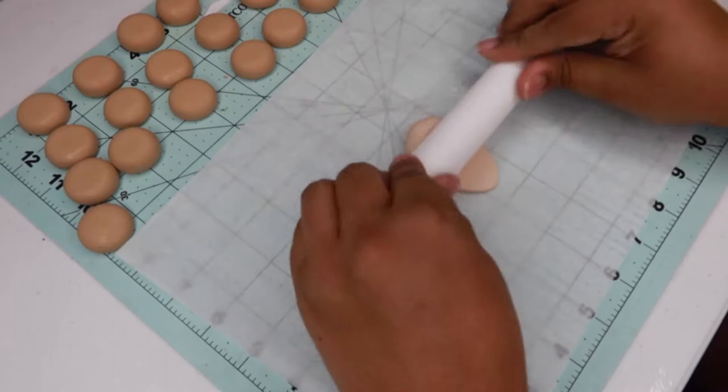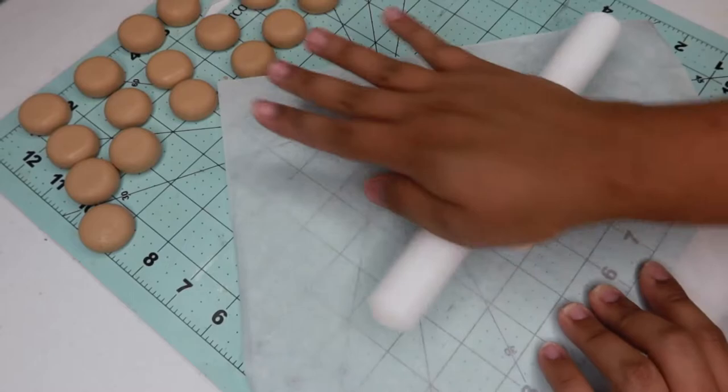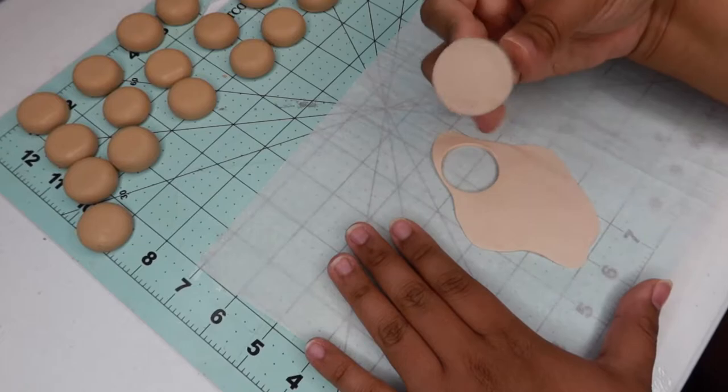With the rolling pin now, I grab a color and start to flatten it out as flat as possible. I do use parchment paper just so the clay does not stick to the actual mat because, let me tell you, it's so hard to remove.